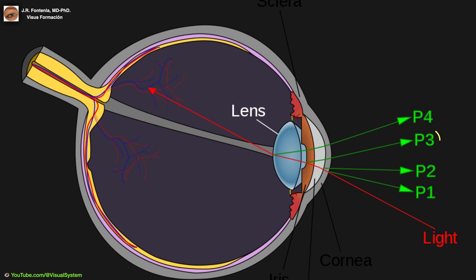The third Purkinje image is larger than the other images. The difference in size is because the curve of the lens is bigger on the front of the lens versus the back of it.